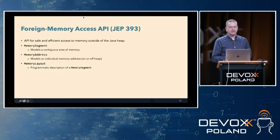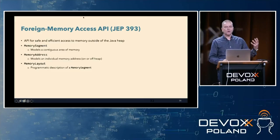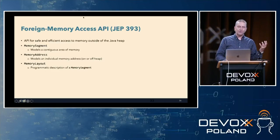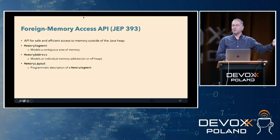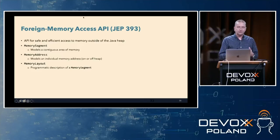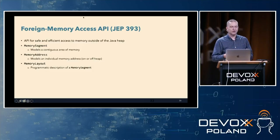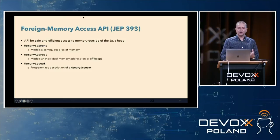You can think of it in terms of three main parts. First, there is a memory segment, which models a contiguous area of memory — a block of memory. Then you have the idea of a memory address, which models a pointer. It points to a memory address somewhere, maybe in the block of memory, maybe on the heap. Then you have a memory layout, which is a programmatic description of a memory segment in terms of what it's holding, giving you the ability to interact with it in a simpler way without doing as much pointer arithmetic.